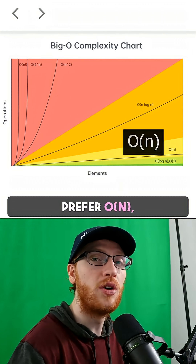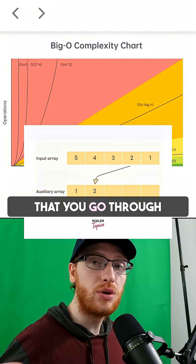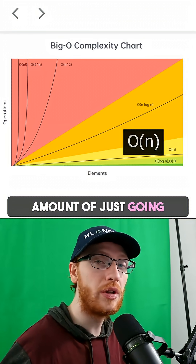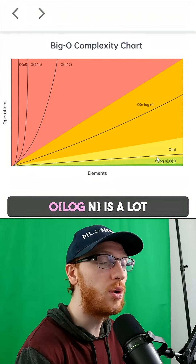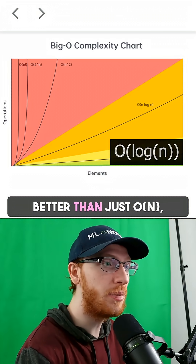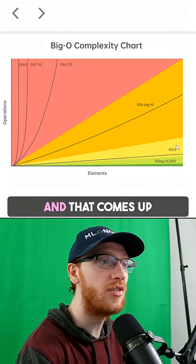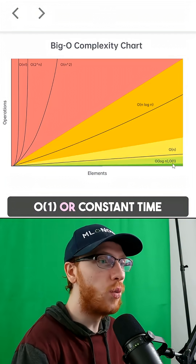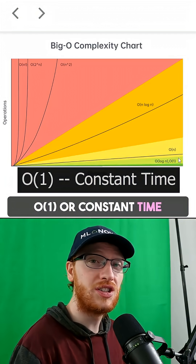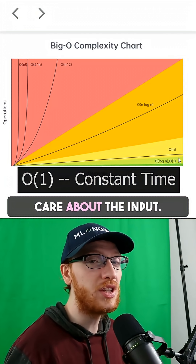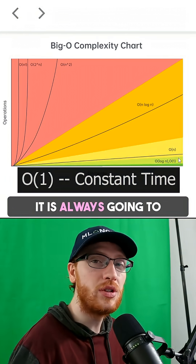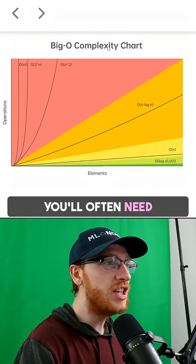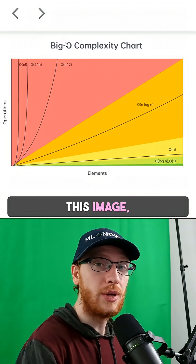From here, we would prefer O of N, which simply means that you go through the array of numbers — there is a constant amount of just going through the array. O of log N is a lot better than O of N, and that comes up when you can use binary search. O of 1, or constant time, means we don't even care about the input — it is always going to take the same very quick amount of time. You'll often need to reference this image, so be sure to save it.